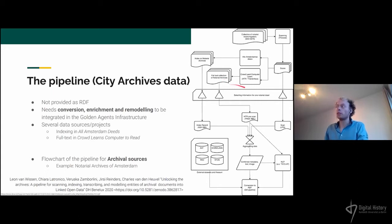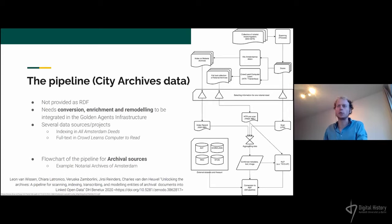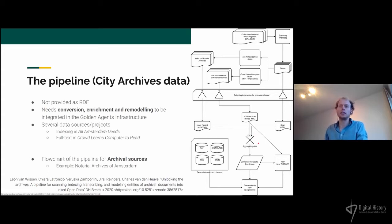In the Golden Agents Project we combine these sources — the index, the HTR output, and information on notaries — aggregate this data, link it back to the original scan, and do further analysis on the full text of an archive using various NLP techniques. Where possible, we try to identify entities and link them to external datasets and thesauri, such as the Getty's AAT or a database like the STCN of the Netherlands.